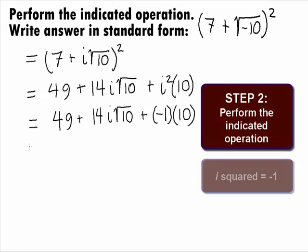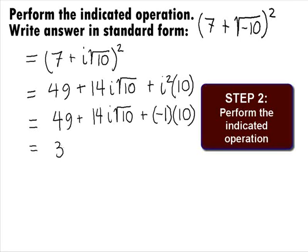Combining the 49 and the negative 10, we get 39 plus 14 square root of 10i.